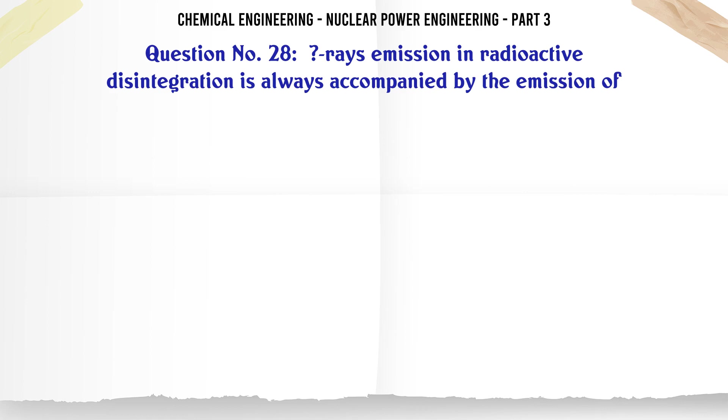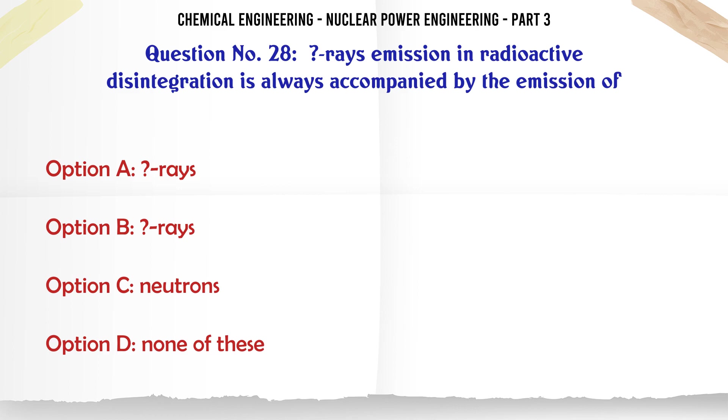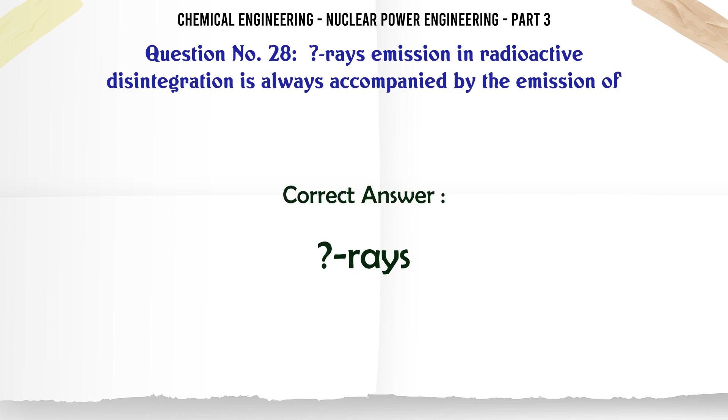Gamma rays emission in radioactive disintegration is always accompanied by the emission of alpha or beta rays. The correct answer is alpha or beta rays.